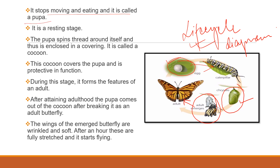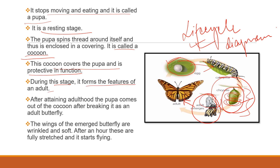The caterpillar then stops moving and eating and is called the pupa — it is the resting stage. The pupa spins thread to form an outer covering called a cocoon, which is protective in function. During this stage, the features of the adult are formed inside the cocoon. After attaining adulthood, the pupa breaks out of the cocoon and becomes a fully formed adult butterfly. The wings are beautiful, wrinkled, and soft, and after an hour they are fully stretched and it starts flying.